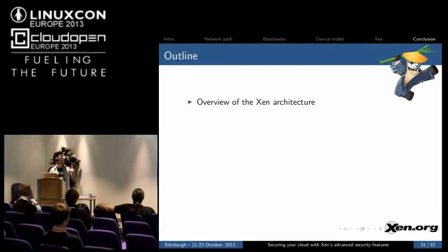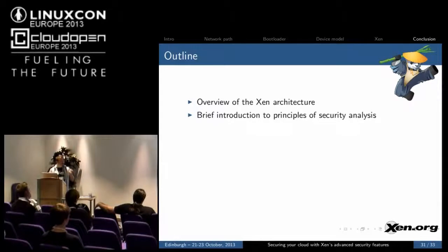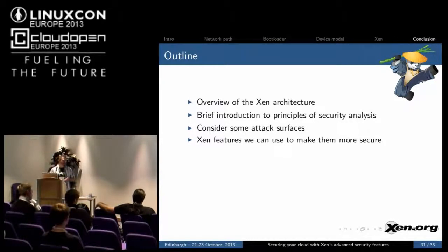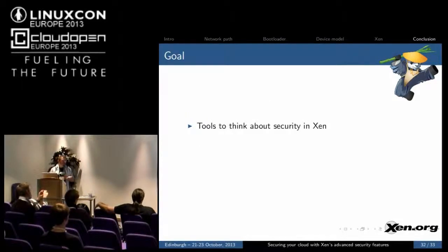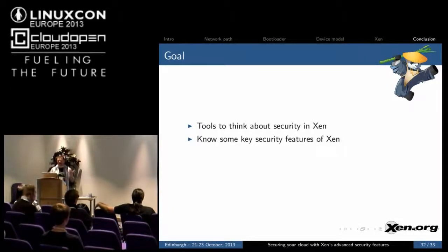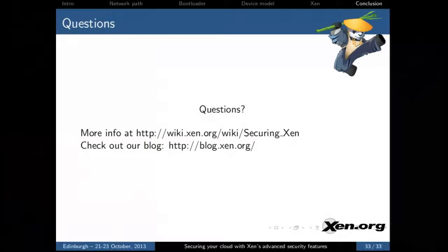In summary, we've given you an overview of the Xen architecture, a brief introduction of the principles of security analysis, and we've considered some attack surfaces in Xen and security features to make them more secure. This includes driver domains, PVGrub, stub domains, PV and HVM comparison, and the Flask example policy. Hopefully I've given you tools to think about security in Xen, you now know some of the security features, and you are equipped with the knowledge to get those working.